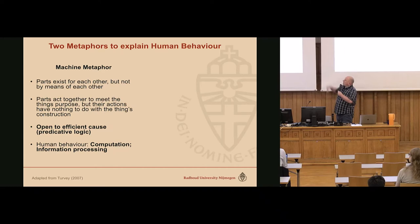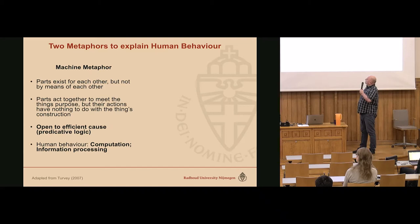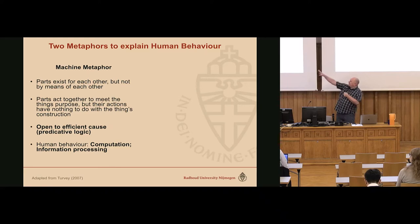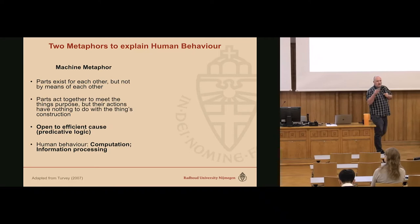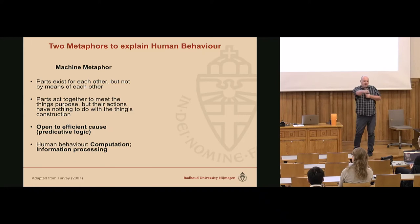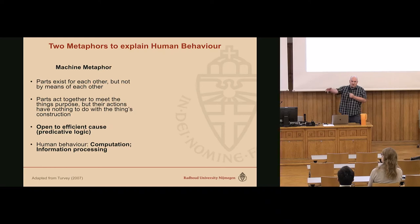There are some properties of these systems. Parts exist for each other but not by means of each other. Parts act together to meet the thing's purpose, but their actions have nothing to do with the thing's construction. Open to efficient cause — that's very important. These types of systems, ergodic systems, make it easy to figure out one or two types of causes for their behavior. Open to efficient cause means you can actually point to something that caused a particular behavior. That's how our experiments are set up: condition one, condition two — manipulate something, and then you know the cause of the change in behavior.